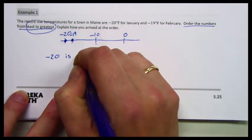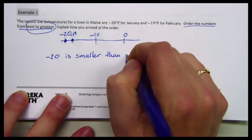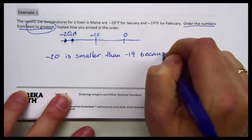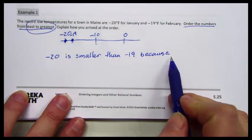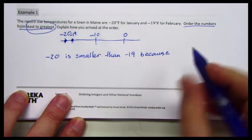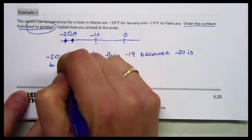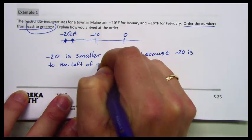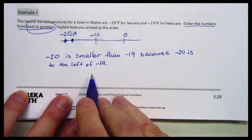So negative 20 is smaller than negative 19, because this is where we're going to explain how we arrived at the order, because negative 20 is to the left of negative 19. Smaller numbers are to the left, larger numbers to the right.